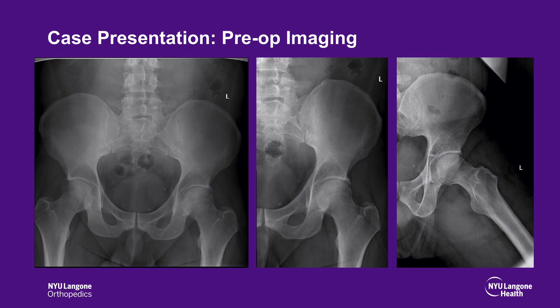These are the preoperative radiographs. The AP pelvis and 45-degree Dunn view of the hip demonstrate cam and pincer impingement. He has a lateral center edge angle of 53 degrees and an alpha angle of greater than 55 degrees. Also noted is a proximal crossover sign.